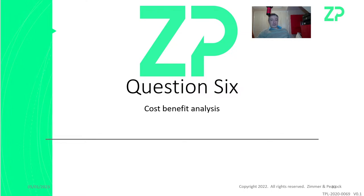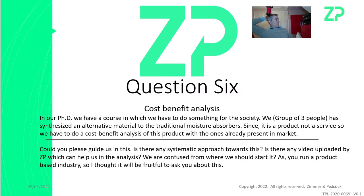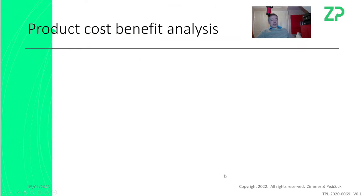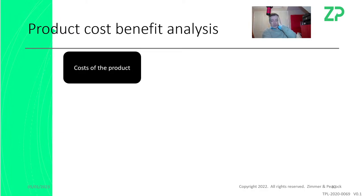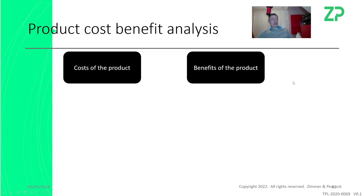Question six: cost-benefit analysis. This is a tough question. A group of people have developed an absorbent material and need to do a cost-benefit analysis. To start one you need to know the cost of the product — also called the BOM, bill of materials — which we covered in last week's webinar. You need to know the selling price, and you can't know that until you know the BOM.